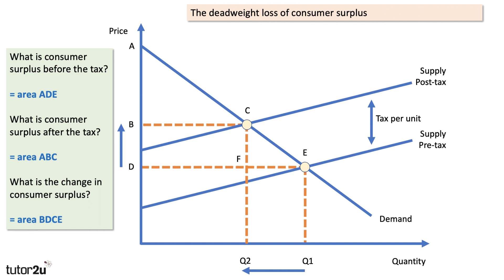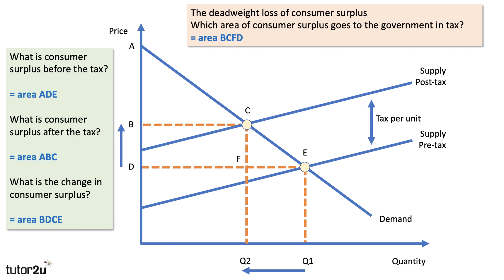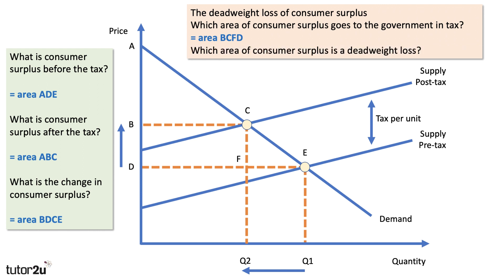We have another concept worth including in your assignments: the deadweight loss of consumer surplus. This is the loss of consumer surplus — which we know is B, C, E, D — that is lost and not transferred to government. The area of consumer surplus that goes to the government in tax is area B, C, F, D — that rectangle. What remains is the deadweight loss: area C, E, F, which is just lost because output has contracted and prices are higher.